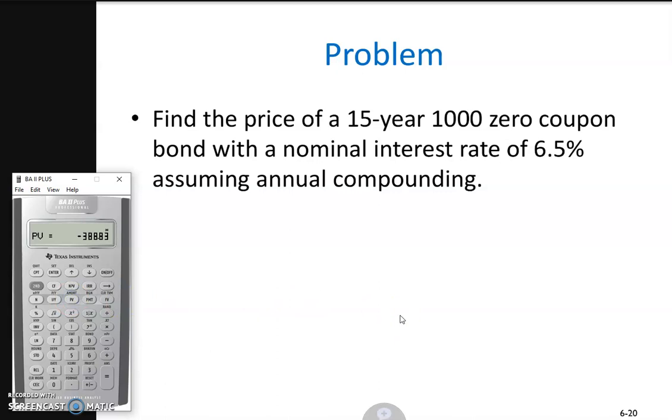Notice there is a negative $388.83 because the calculator assumes an investment outcome perspective. This means if I invest $388.83 in the zero coupon bond, at the end of year 15, I will receive a $1,000 principal repayment.